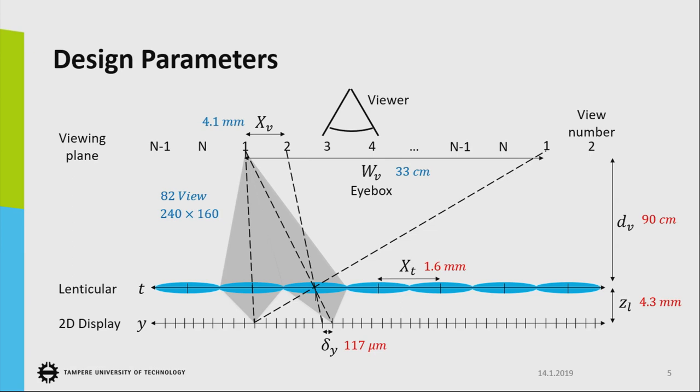The view pitch is 4.1 millimeters. This is especially important. This is what SuperMultiView is designed for, to make the view pitch smaller than the average eye pupil. Here we assume that the average eye pupil is 5 millimeters, so that the transition when the viewer moves in the lateral movement will be smooth. You will observe smooth motion parallax. In this iBox, the total number of views is 82.